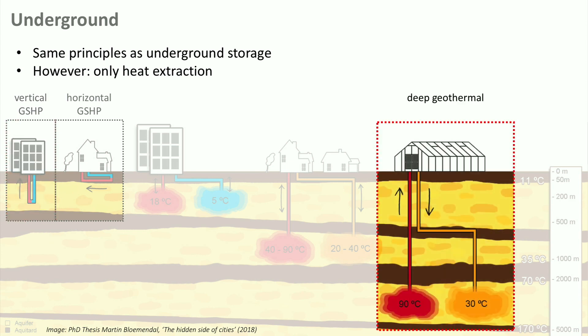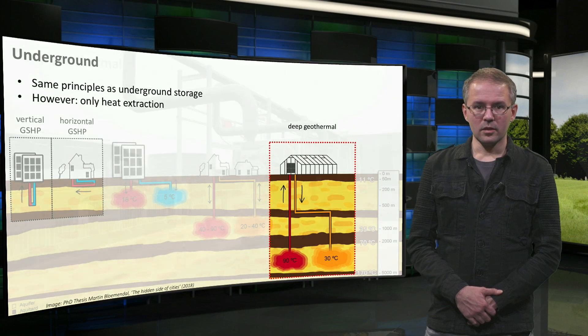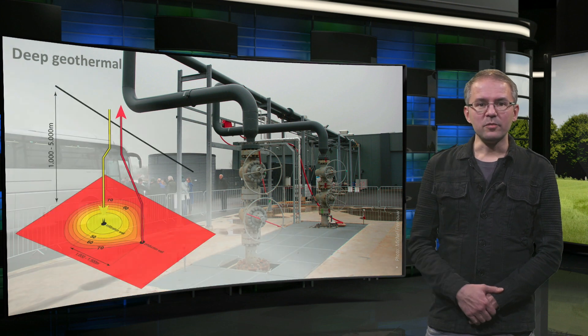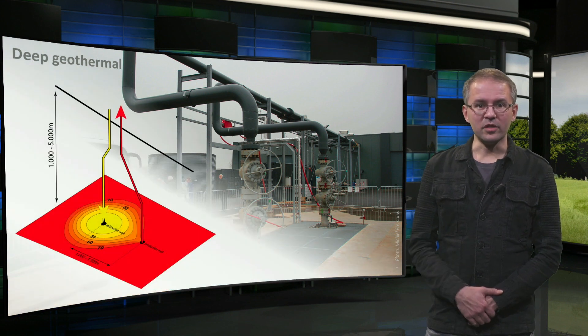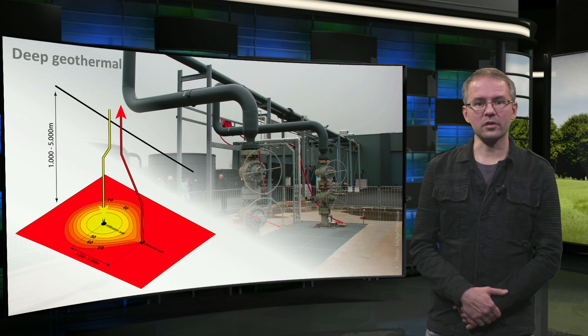Finally, there are deep geothermal systems. The deeper you go, the hotter it gets. The average temperature goes up about 3 degrees Celsius for every 100 meters of depth. To get high temperatures, the well will therefore have to be very deep — 500 meters to 2 kilometers is common, and for industrial sources 5 to 7 kilometers is being explored. The presence of an aquifer at depth makes it a lot easier to extract this heat, as shown here. Because of the need for deep drilling, deep geothermal systems are generally very expensive and therefore only suitable for very large buildings, neighborhoods and districts. This example is used for a horticulture complex in the Netherlands.